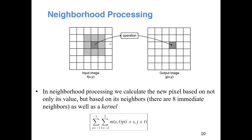The other popular image processing technique is neighborhood processing. In neighborhood processing, the pixel value in the output image depends not only on the pixel at the corresponding position in the input image, but also on the neighbors of that pixel. For example, if I am processing a particular pixel, its output value depends on that pixel as well as its neighbors. There are 8 immediate neighbors, but in many cases we can also consider pixels farther away.